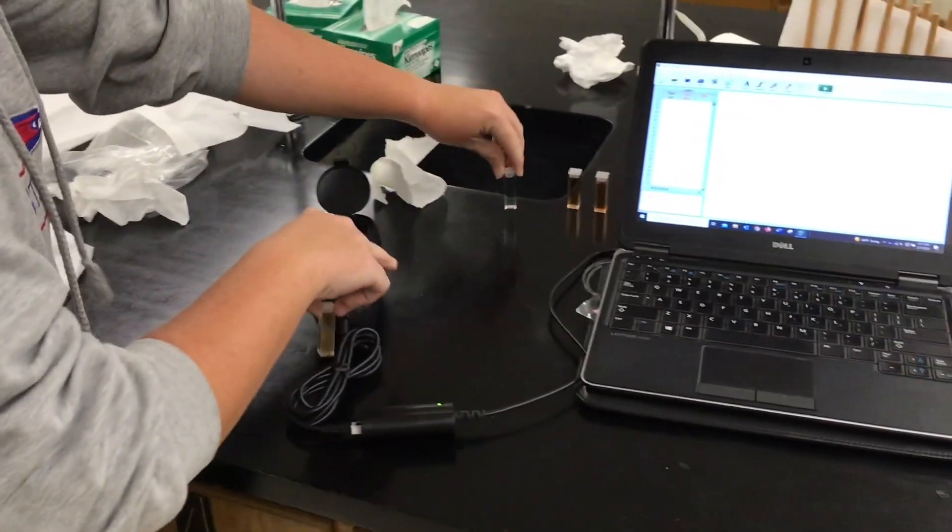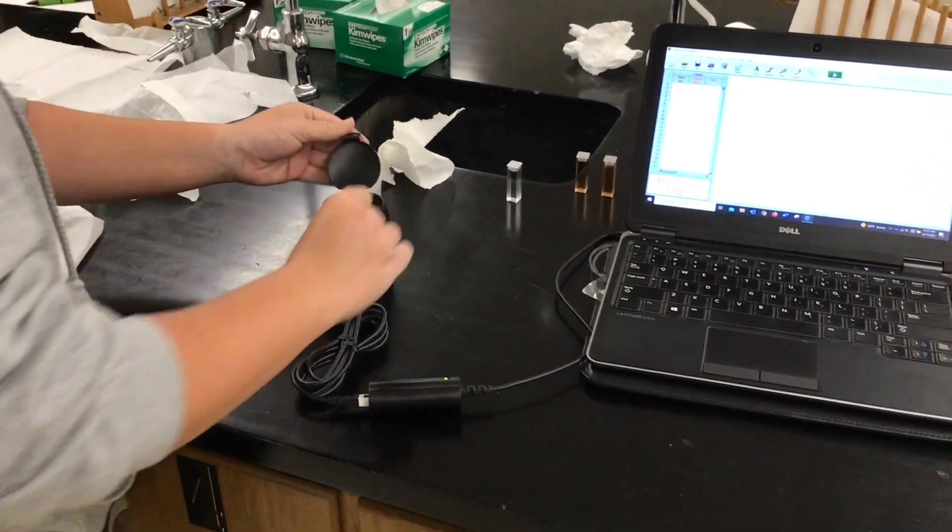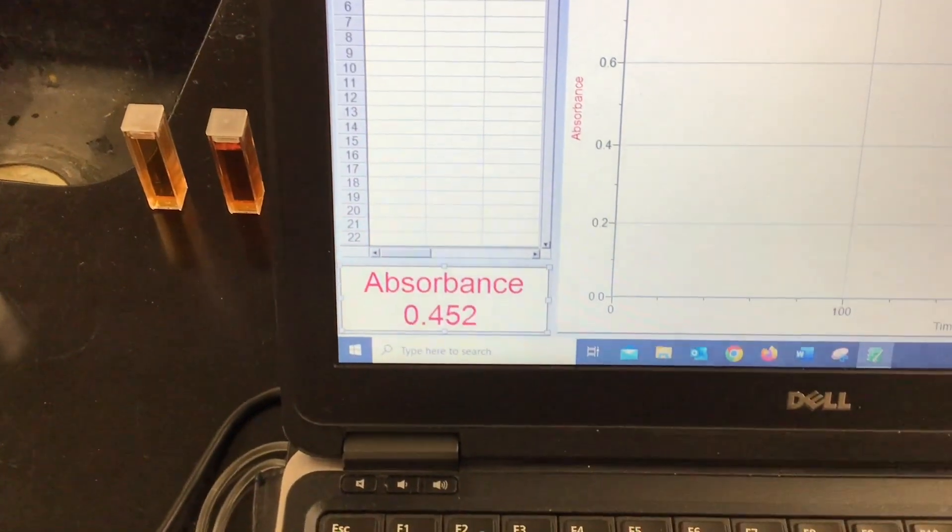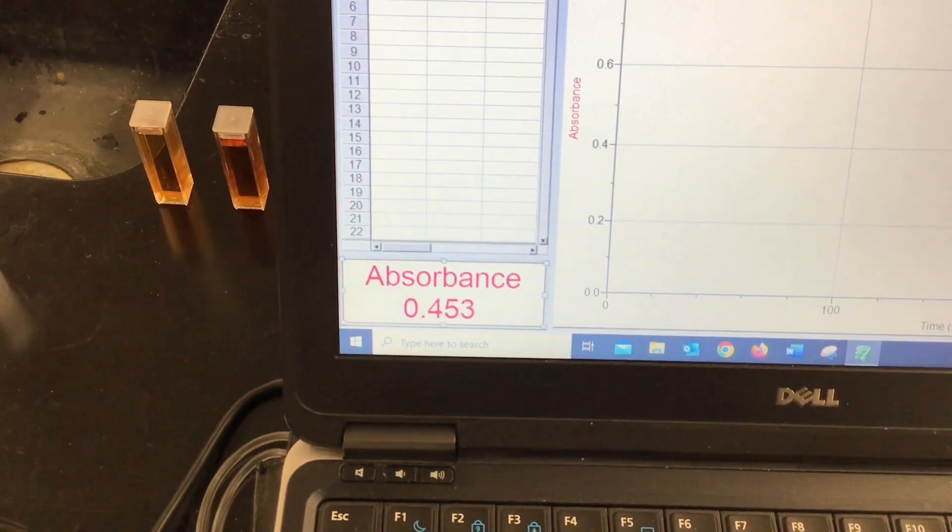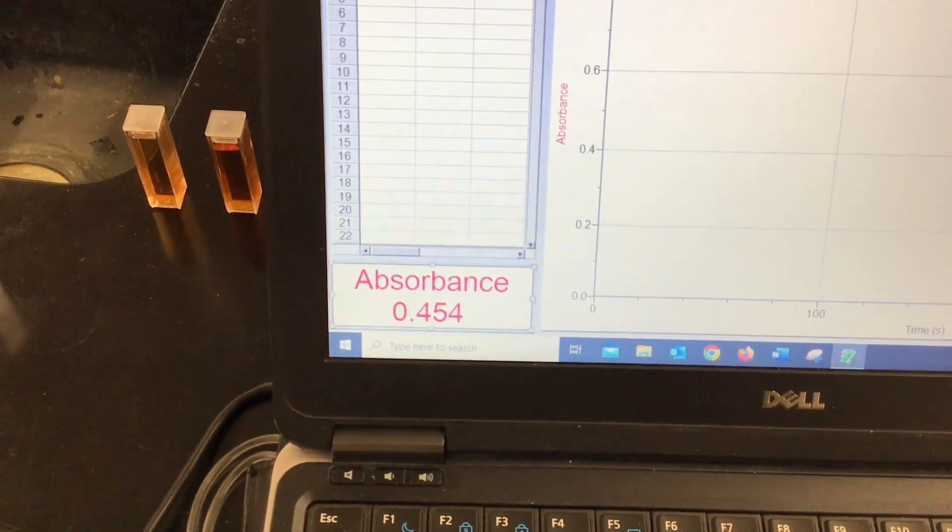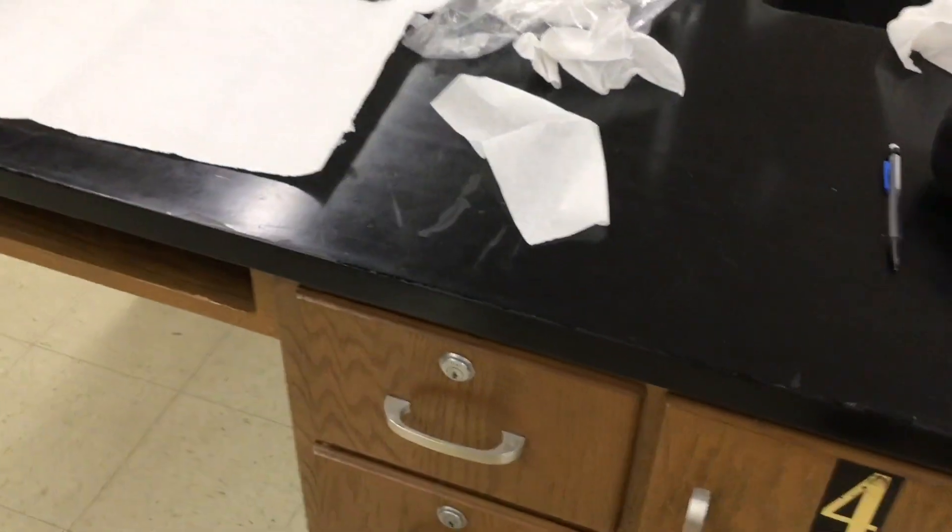Okay, we're measuring test tube three. We've done the preliminary in test tube five and test tube four. So this absorbance is moving 0.454. 0.454 absorbance and we'll get that data later.